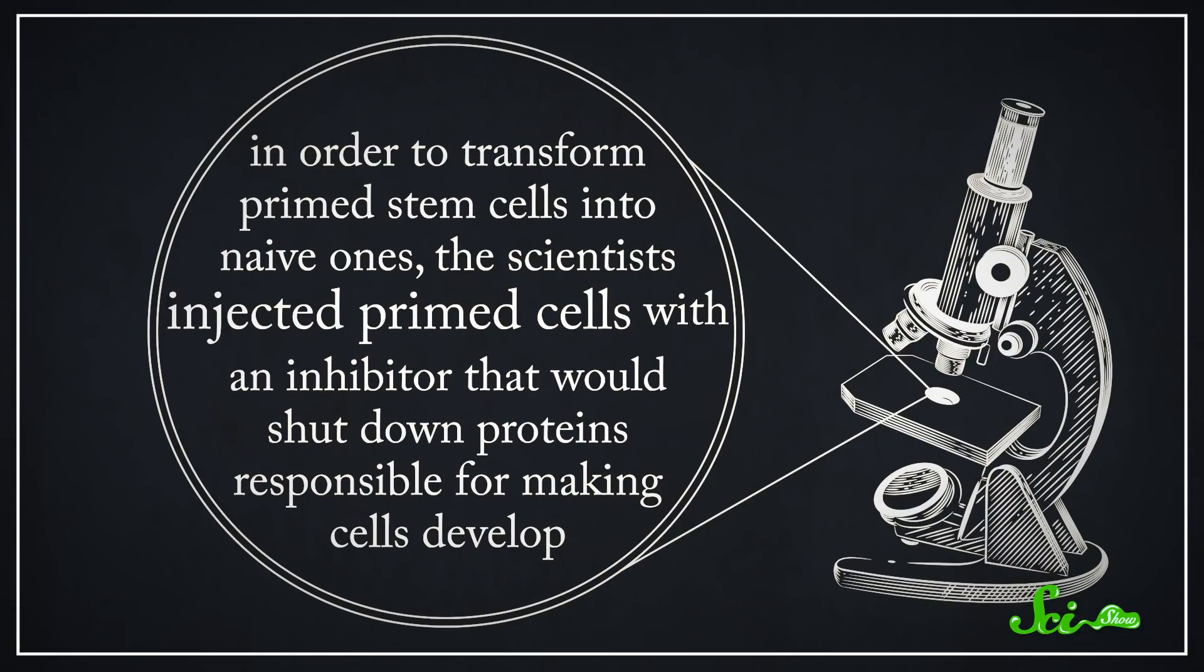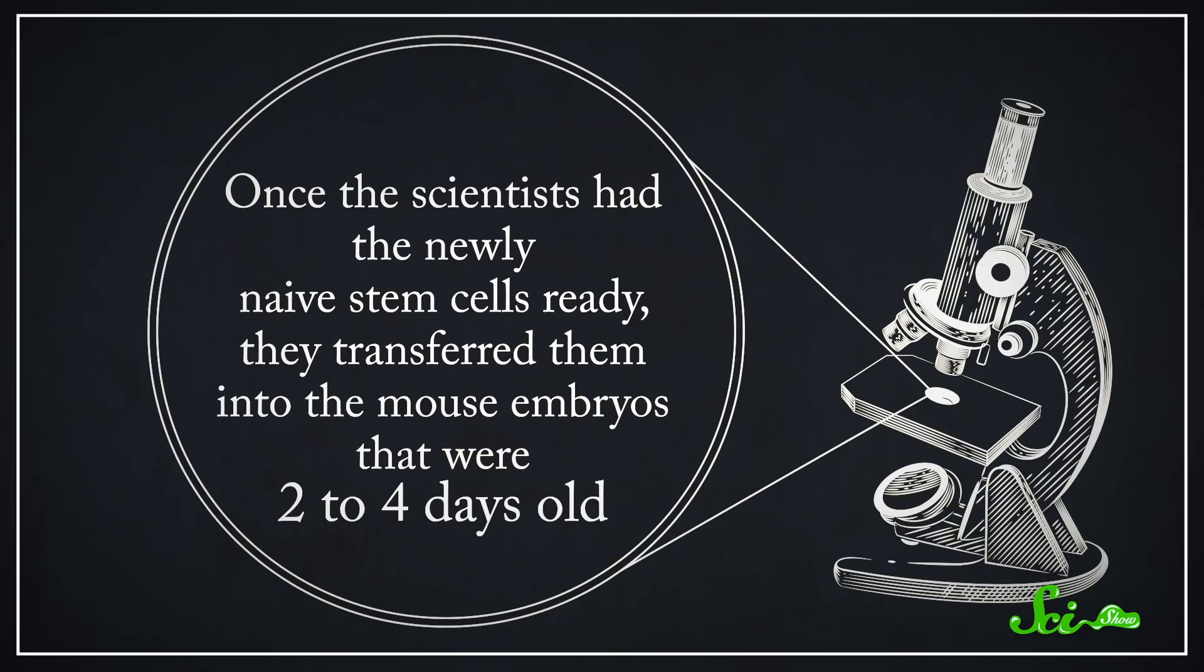So, in order to transform the primed stem cells into naive ones, the scientists injected primed cells with an inhibitor that would shut down the proteins responsible for making the cells develop. Once the scientists had the newly naive stem cells ready, they transferred them into the mouse embryos that were two to four days old.